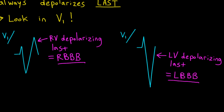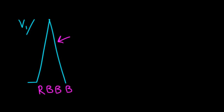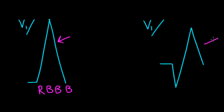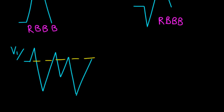Most left bundle branch blocks tend to look almost completely negative in lead V1, while most right bundle branch blocks have a rabbit ear kind of appearance. Let's look at another wide QRS in lead V1 — the whole thing is positive, including the terminal QRS, so this is a right bundle branch block. Not all right bundle branch blocks have rabbit ears, but that characteristic pattern is common. The terminal deflection determines the diagnosis.